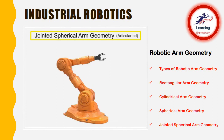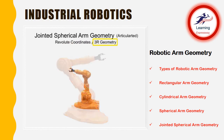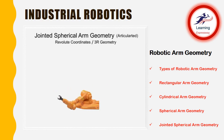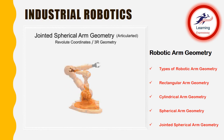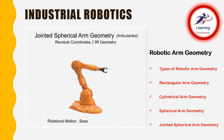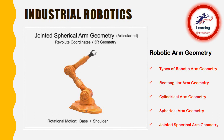Jointed spherical arm geometry robots have rotation in three directions, use revolute coordinates, and are given the designation of 3R. They are one of the most popular types of robotic arms and most accurately mimic the movement of the human arm. Robotic arms with jointed spherical or articulated geometry rotate on at least three axes. Left and right movements are provided by rotation at the base, horizontal movement by rotation at the shoulder, and vertical movement by rotation at the elbow.